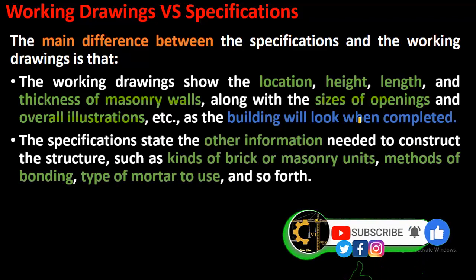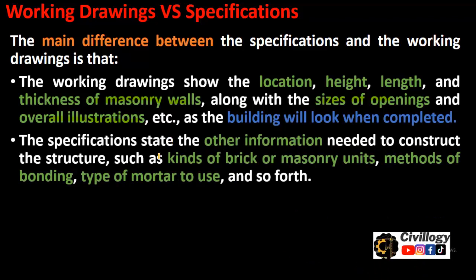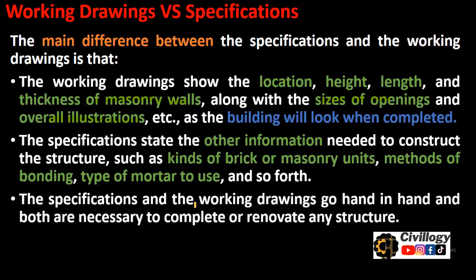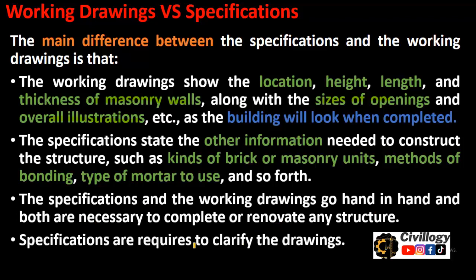Whereas specifications state the other information needed to construct the structure, such as kinds of brick or masonry units — class A, class B, or class C, first class brick, second class brick — and masonry units could be stones, blocks, or bricks. Methods of bonding such as English bond, Flemish bond, and other types of bond; type of mortar to use, and so forth. Specifications and working drawings go hand in hand, and both are necessary to complete or renovate any structure. Specifications are required to clarify the drawings.